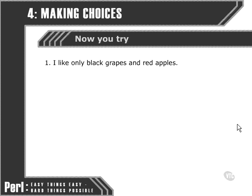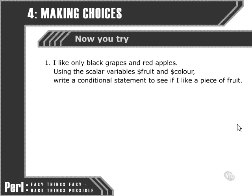First of all, take this arbitrary condition on board: the fact that I only like two kinds of fruit, black grapes and red apples. Using this logic and the scalar variables fruit and colour, write a conditional statement that will output a result depending on whether or not I like a certain piece of fruit, using only those two scalar variables.